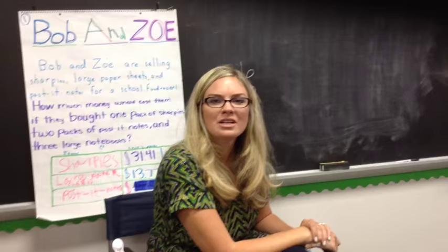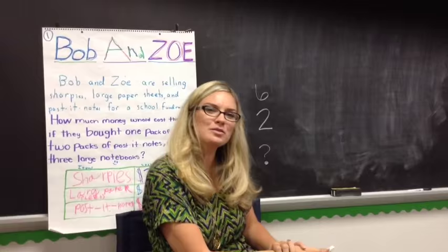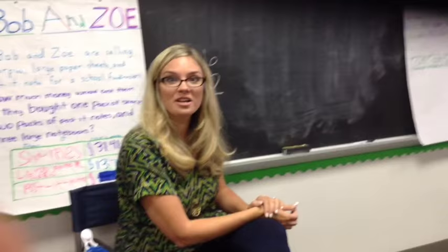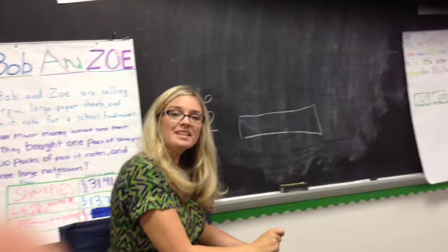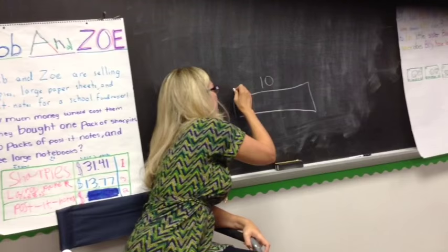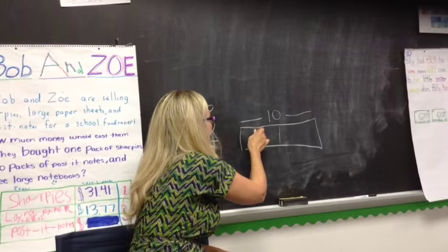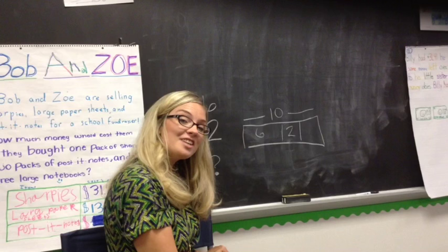Now remember, we know that they have ten altogether—it's the total. So we're missing a part, and that's what we're trying to find. Pictures can really help you solve problems like this. Let's draw a strip diagram. This represents all of the dogs. We know that there's ten. We know that the first friend has six dogs, the second friend has two dogs.